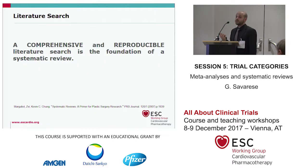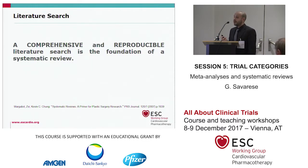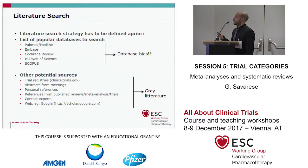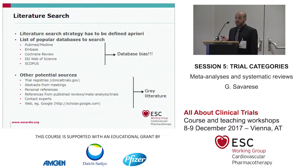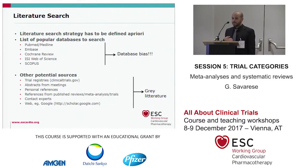The literature search looks to be the easiest part of a systematic review or meta-analysis, but the truth is that it's the most important step, because if we forget to include one study or we use wrong inclusion criteria to summarize evidences about one topic, the results of our systematic review or meta-analysis will be somehow changed. A comprehensive and reproducible literature search is the foundation for a systematic review. It's important not just to check one database — we often just go on PubMed and check some keywords — but this is not enough. It's necessary to check more than one database because some studies could be indexed on one database but not on another.